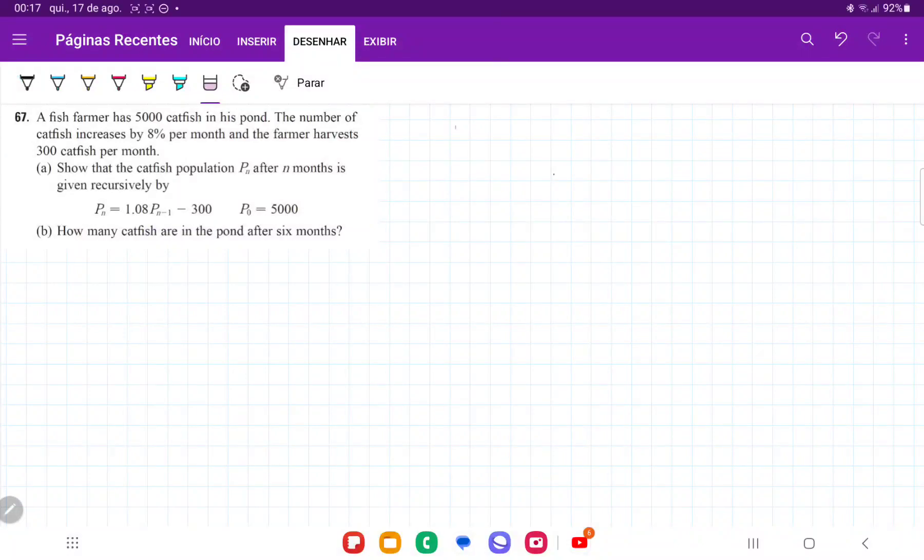For number 67, we have here that a fish farmer has 5,000 catfish in his pond. The number of catfish increases by 8% per month and the farmer harvests 300 catfish per month.